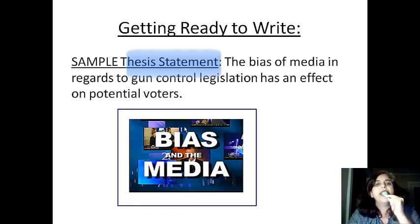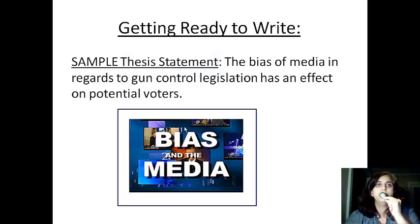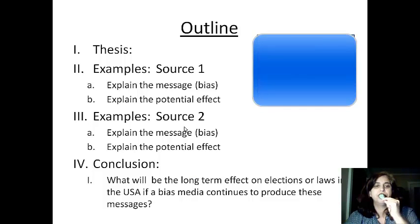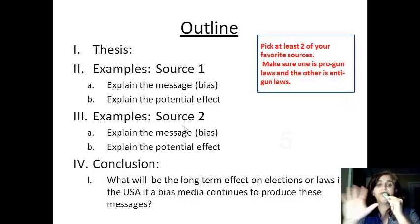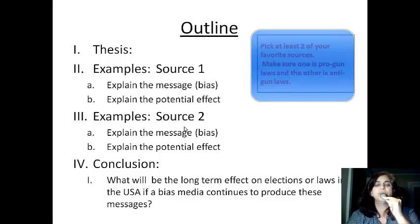When you're getting ready to write, start with a thesis statement. For example: 'The bias of media in regards to gun control legislation has an effect on potential voters.' After your thesis, develop your ideas using this sample outline: discuss Source 1 — what's the message and the potential effect? Explain Source 2 — again, explain the message and the potential effect. You're required to do this for five sources. In the conclusion paragraph, address what will be the long-term effect on elections or laws in the USA if a biased media continues to produce these messages.